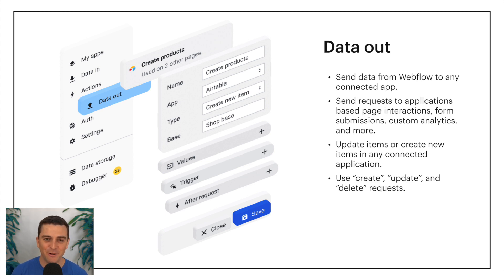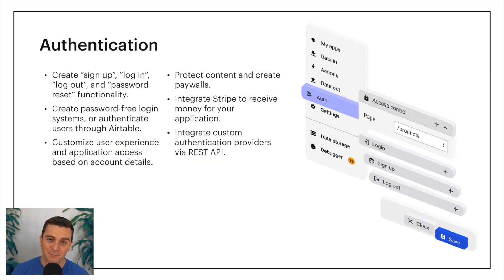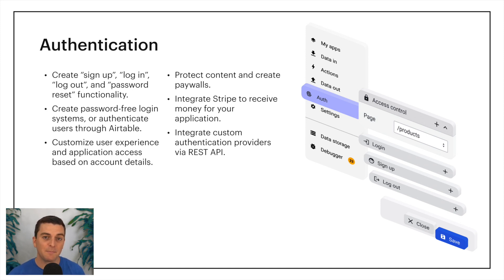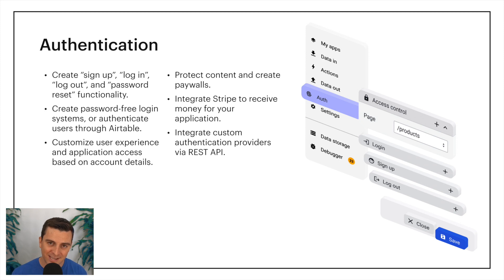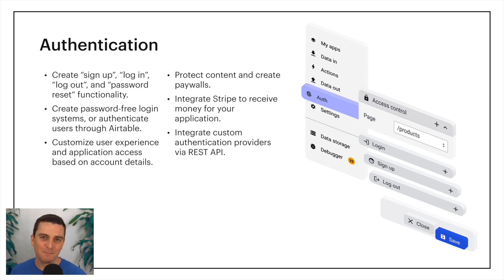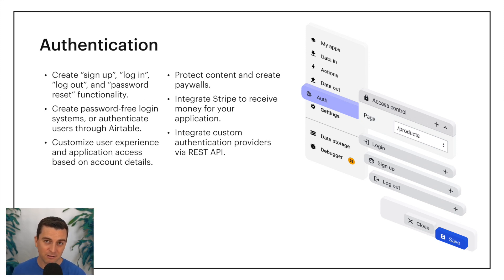The last category is Authentication. User auth creates a personalized experience to transform a tool into an app. We can create signup, login, logout, and password reset functionality. We can create password-free login systems or authenticate users through Airtable. We can customize user experience and application access based on account details, protect content and create paywalls, and integrate Stripe-powered payments to receive money for our application. Custom authentication providers can be integrated through REST APIs.